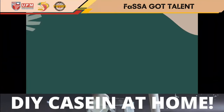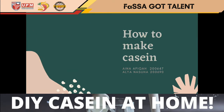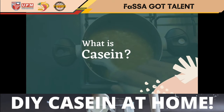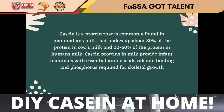What is the protein commonly found in mammalian milk that makes up about 80% of the protein in cow's milk and 20 to 60% of the protein in human's milk? Casein proteins in milk provide infant mammals with essential amino acids, calcium binding, and phosphorus required for skeletal growth.